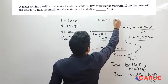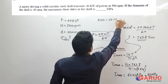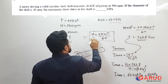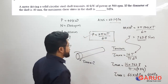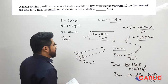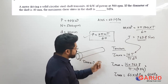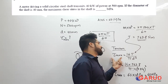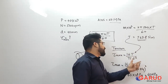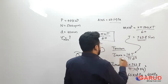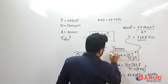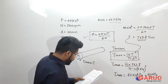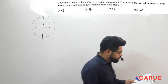The two formulas you need to remember for this type of numerical are: first, the power formula P = 2πNT/60, and second, for maximum shear stress in a shaft, tau max = 16T / (πD³). I hope this sum is clear. Let's go to the next sum.